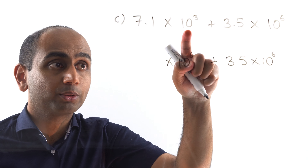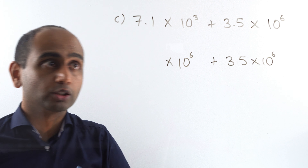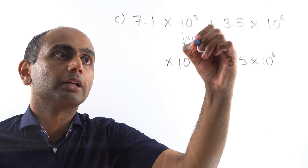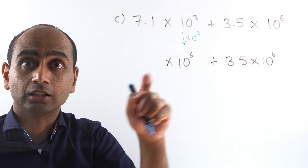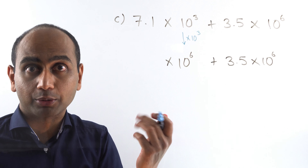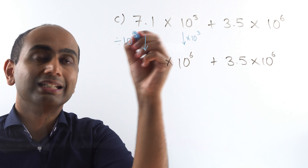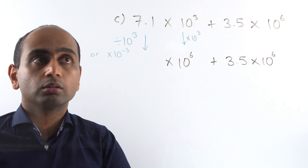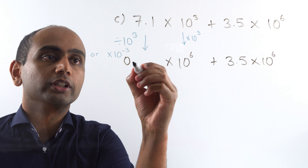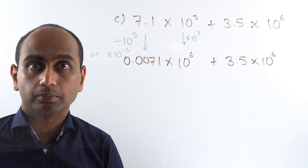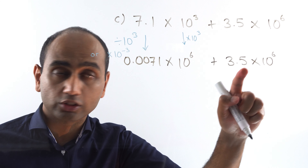To get from 10 to the power of 3 to 10 to the power of 6, I need to multiply by 10 to the power of 3 — in other words, multiplying by a thousand. So to compensate, to keep this number the same, I need to divide 7.1 by 10 to the power of 3, or equivalently multiply by 10 to the negative 3. Making it a thousand times smaller gives 0.0071. So I've got 0.0071 lots of 10 to the 6 plus 3.5 lots of 10 to the 6.